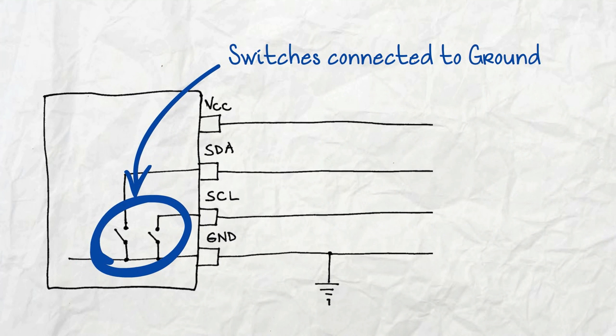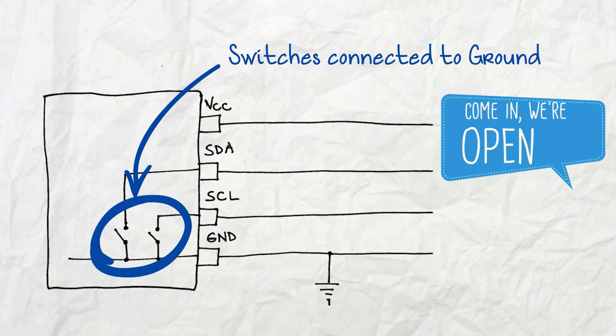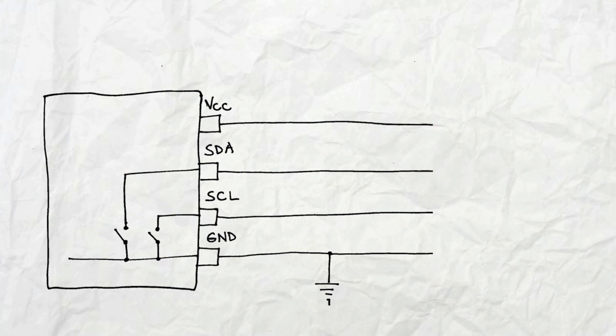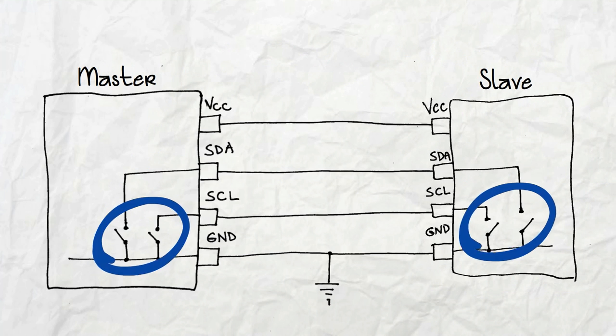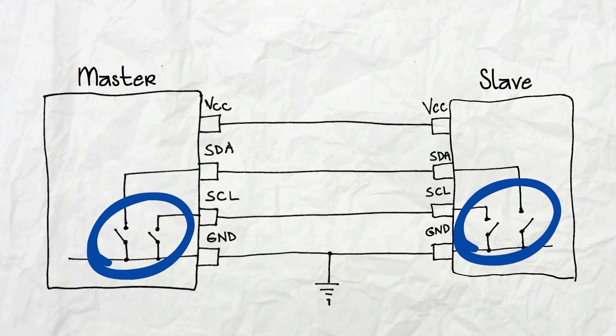Inside the device, the data and the clock lines are each connected to the ground through a switch. This switch can either be open or closed. If this device is working as a master, then the other one is the slave. But from a hardware perspective, they look pretty much the same.